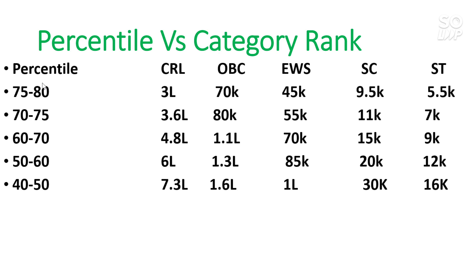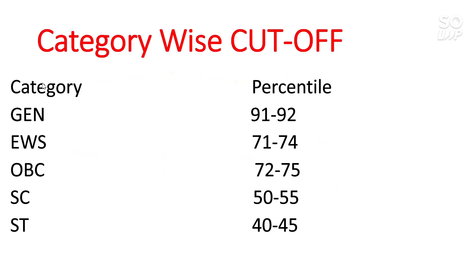Now for the category-wise expected cutoff: General category will be around 91 to 92 percentile, EWS 71 to 74 percentile, OBC around 72 to 75 percentile, SC category 50 to 55 percentile, and ST 40 to 45 percentile. This data is based on thorough analysis and you can really trust it to estimate which college you may get in JoSAA 2021 counseling. Thanks for watching — please like and share this video.